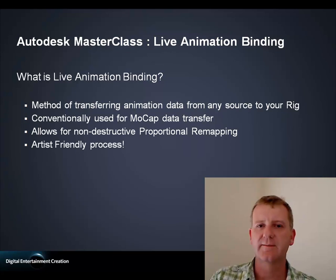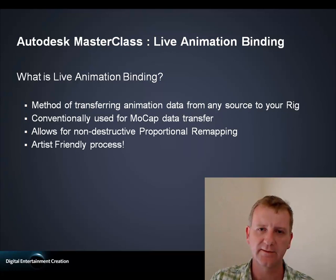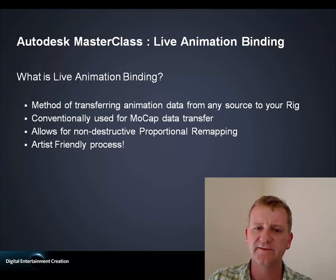So what is animation binding? It's basically a method of transferring animation data from one source onto your production rig. I use the word 'source' very carefully — this isn't limited to skeleton data. The source can be anything; as long as you can bind to it, it can be any data, as you'll see later on. It's not a new technique — it's been used for many years for getting mocap data onto custom rigs. The difference here is showing how you can expand on this idea to allow for proportional remapping across characters that are completely different in their internal structures and proportions. And it's a very artist-friendly process.